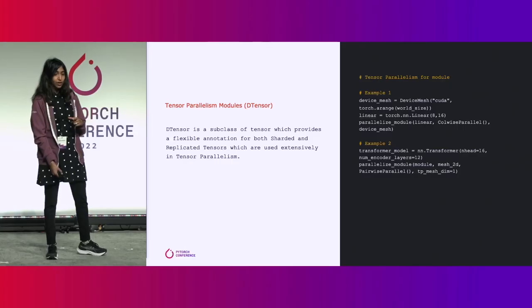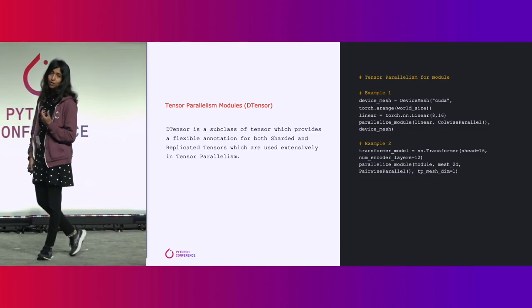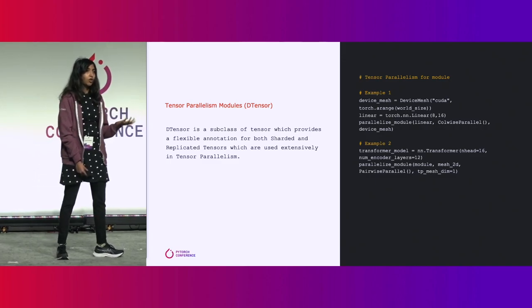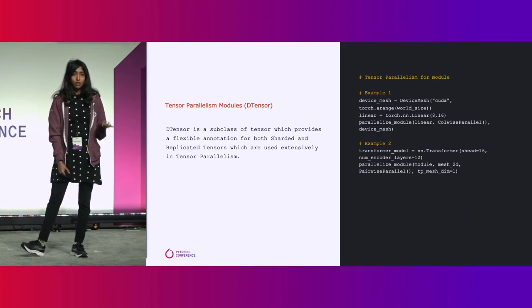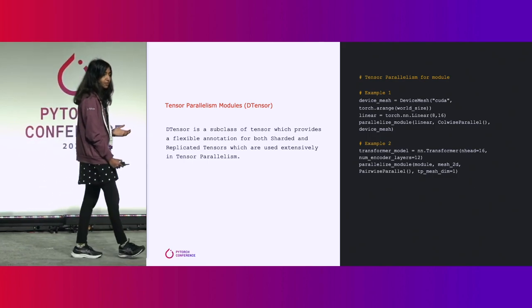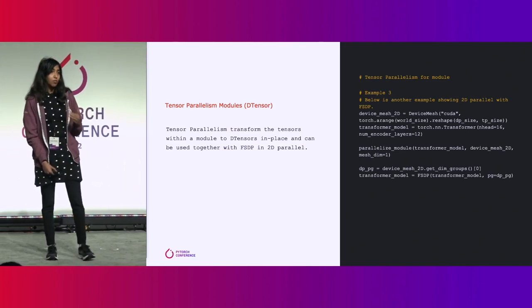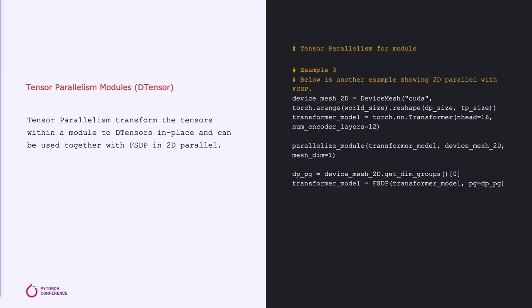In example two, you have an entire transformer model that you can call parallelized module with, and here we specify a pair-wise parallel plan — column-wise sharding followed by row-wise sharding. Parallelized module is built on top of DTensor, and DTensor is how we annotate how tensors should be sharded or replicated. We also provide support for 2D parallelism using parallelized module — the same transformer model example, but then we wrap it with FSDP after, giving us 2D parallelism. The tensor parallelism API replaces the parameters in place with DTensors that have been annotated to specify if a tensor is replicated or sharded.